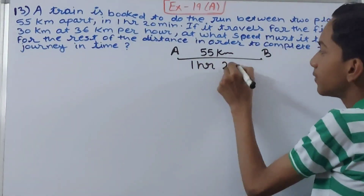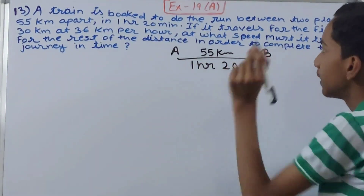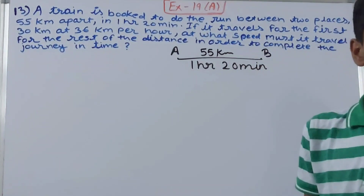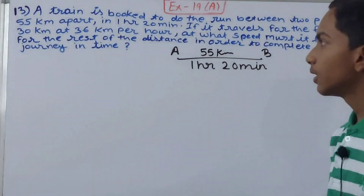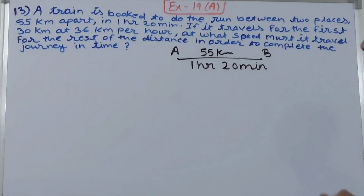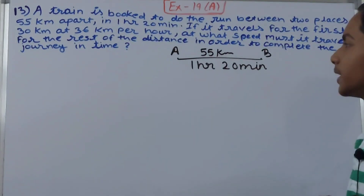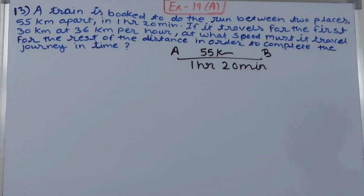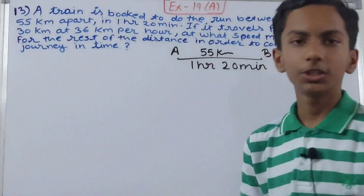It says: if it travels for the first 30 kilometers at 36 kilometers per hour, at what speed must it travel for the rest of the distance in order to complete the journey in time?